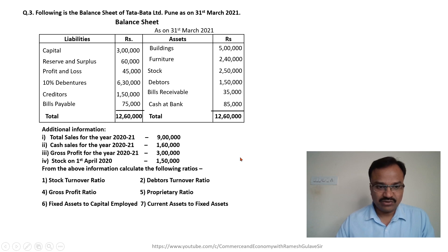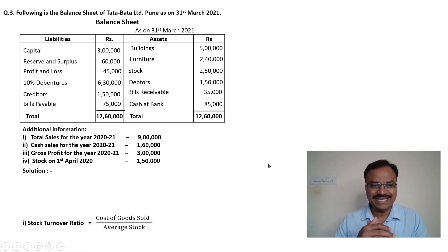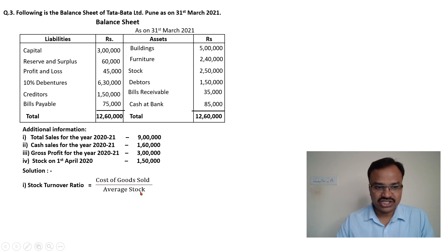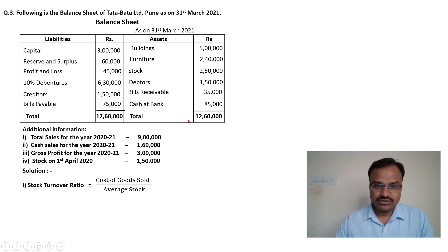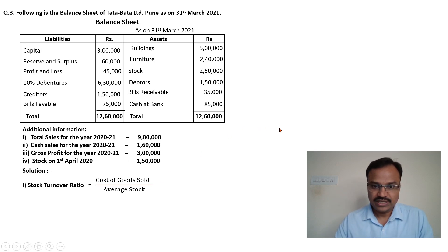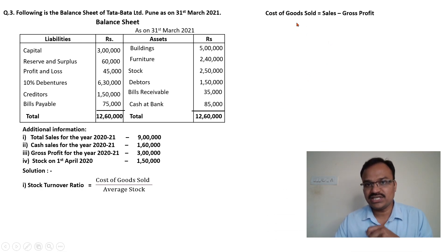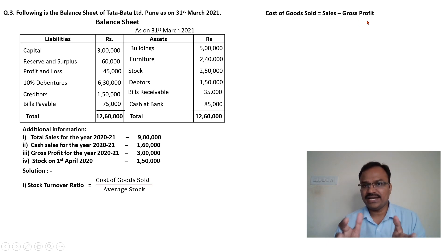Let us start with the first ratio - stock turnover ratio. The formula for stock turnover ratio is cost of goods sold divided by average stock. In order to find out the stock turnover ratio, we must first calculate the cost of goods sold and average stock. Cost of goods sold can be calculated with this equation: cost of goods sold is equal to sales minus gross profit.